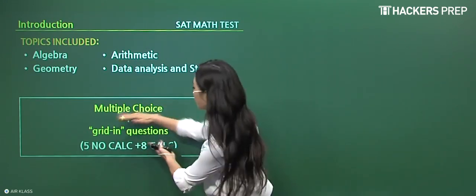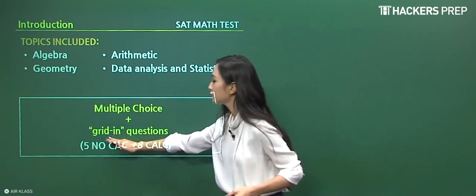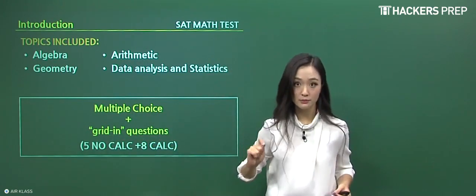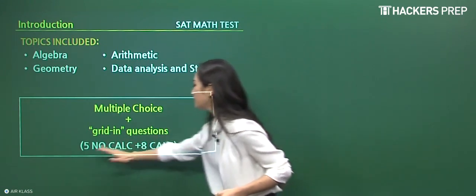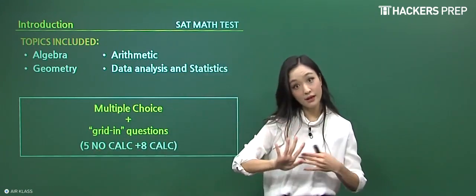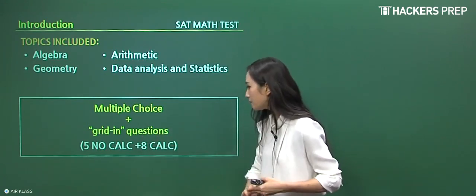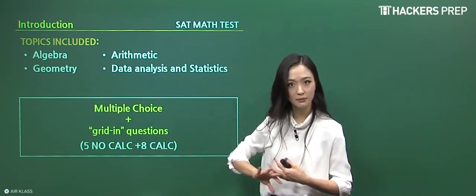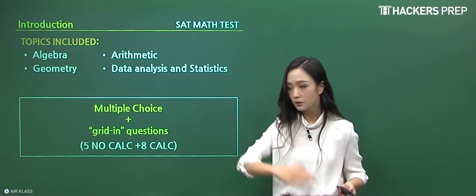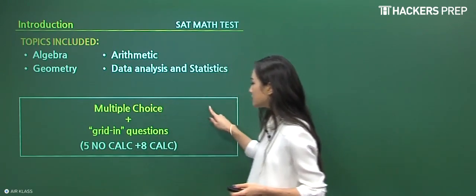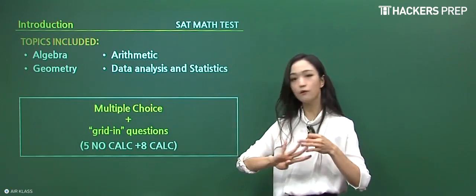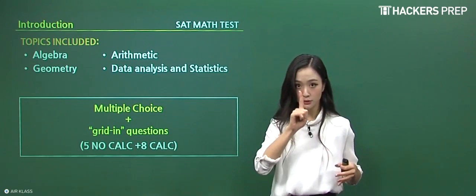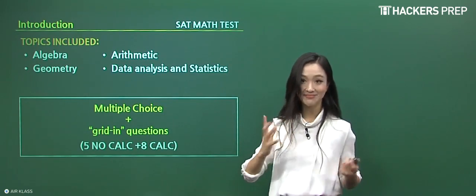So overall, there's a multiple choice section and a grid-in portion. It simply means writing down the free response part. And we can see that for the no calculator part, there are going to be five grid-in questions, and for the calculator part, there are going to be a total of eight grid-in questions. The remaining part being all multiple choice, using the given information, and you just select one answer based on the four options they provide from A through D. There's only going to be one, and only one answer.